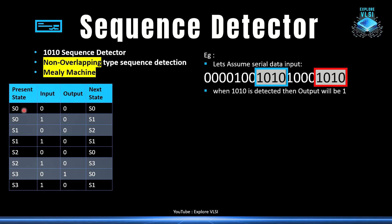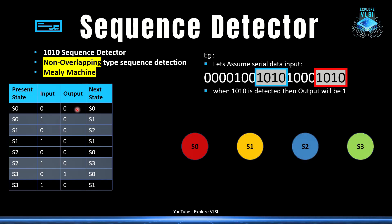If S0 is the current state and the input is zero, the next state stays S0 and the output is zero. In the arc labels, the first value is the input and the second is the output. We haven't detected 1010 yet, so the output is zero. We have states S0, S1, S2, S3. Whenever we detect a one while in S0, we move to S1 with output zero.